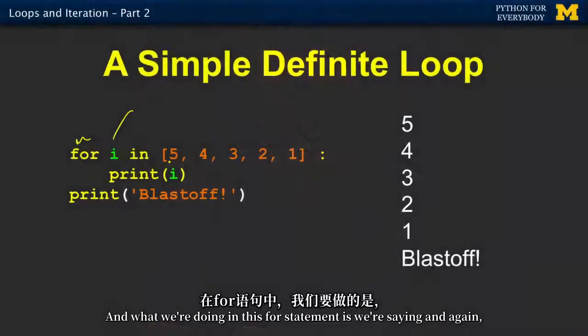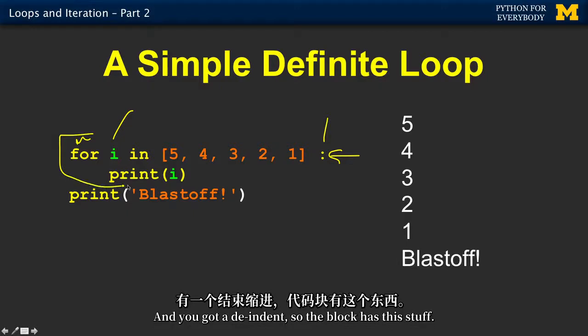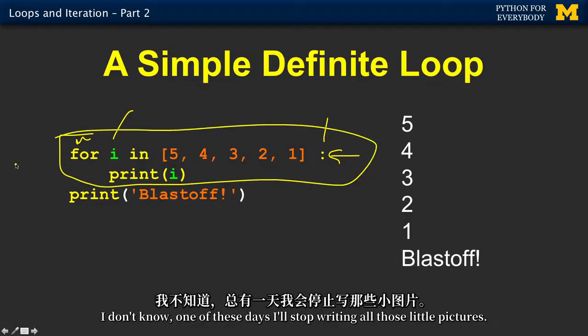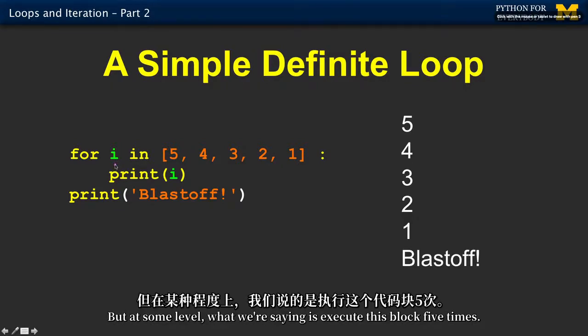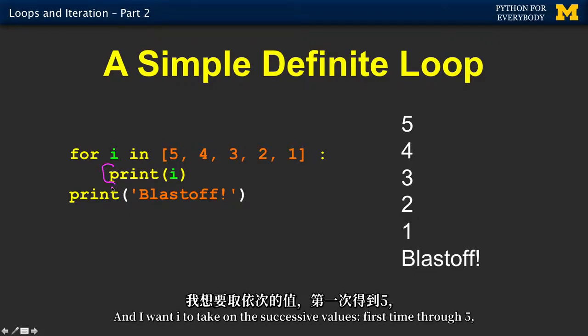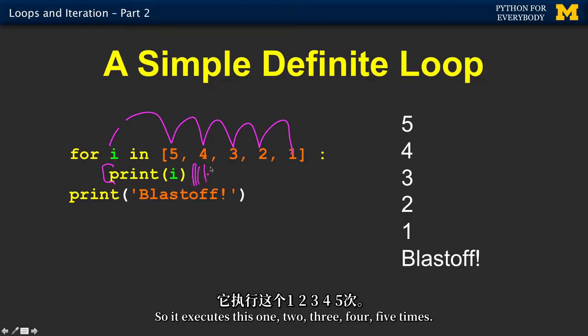Five, four, three, two, one. And what we're doing in this for statement is we're saying it's got an indented block and you got a de-indent so the block has this stuff. But at some level, what we're saying is execute this block five times. And I want I to take on the successive values, first time through five, second time through four, next three, then two, then one. So it executes this one, two, three, four, five times, and the first time I is five, print. The second time I is four, print.